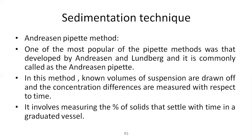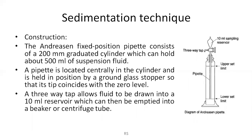The Andreessen pipette method is one of the most popular methods, developed by Andreessen and Lundberg. In this method a calculated volume of suspension is drawn off and the concentration differences are measured with respect to time. It involves measuring the percentage of solid that settles with time in a graduated vessel. The Andreessen pipette has a graduated cylinder of 200 mm diameter and can hold about 500 ml of suspension fluid. A pipette is located centrally in the cylinder, positioned so its tip coincides with the zero level. A three-way tap allows fluid to be drawn into a 10 ml reservoir, which can then be emptied into a beaker or centrifuge tube for powder collection.